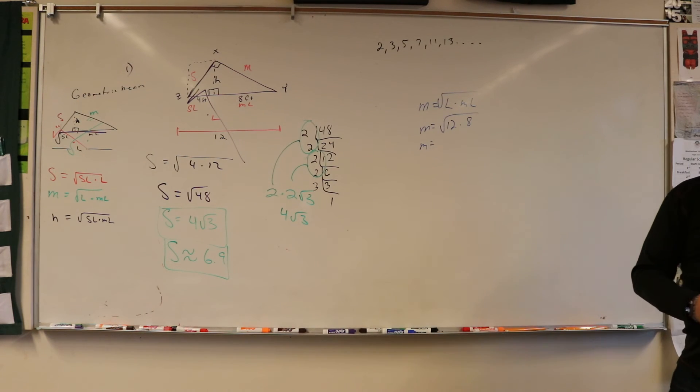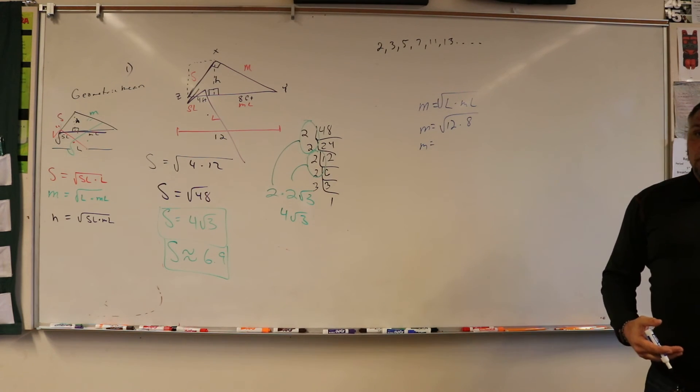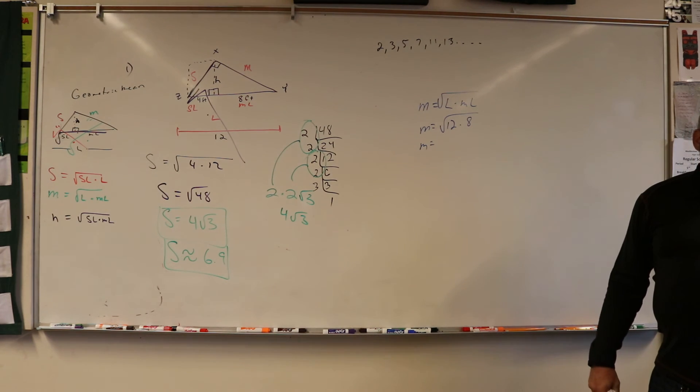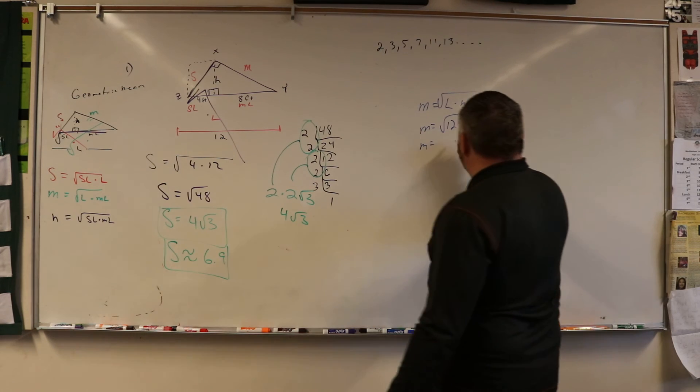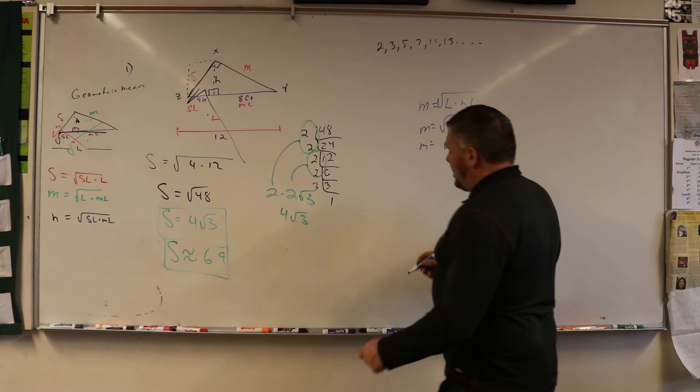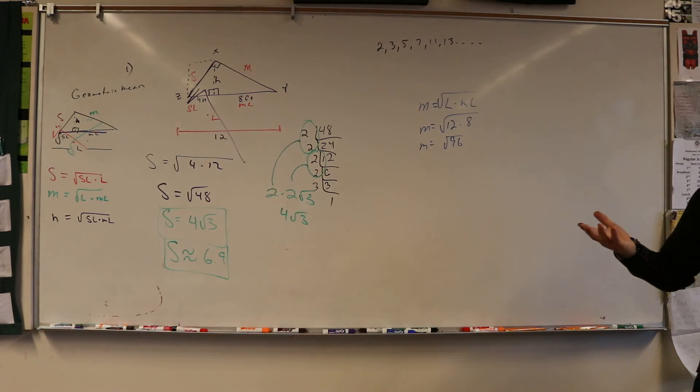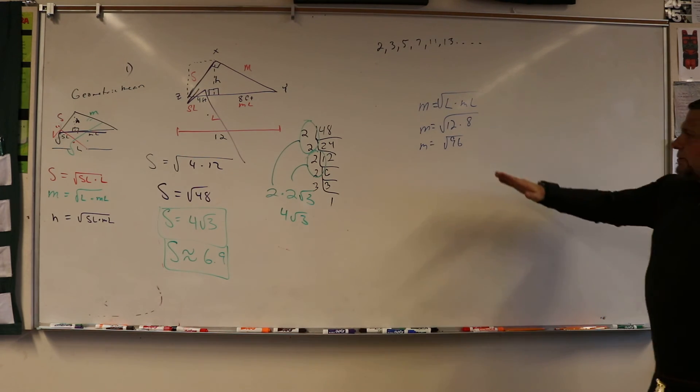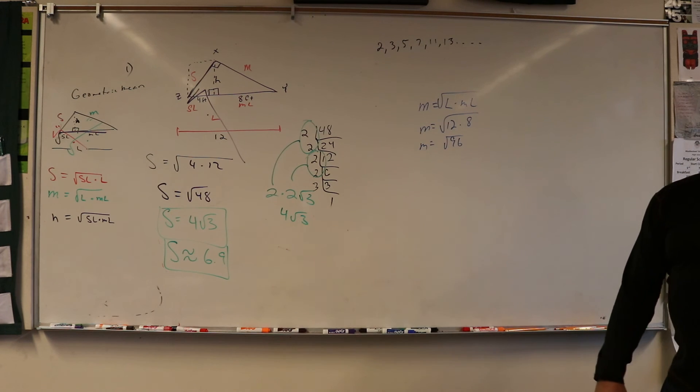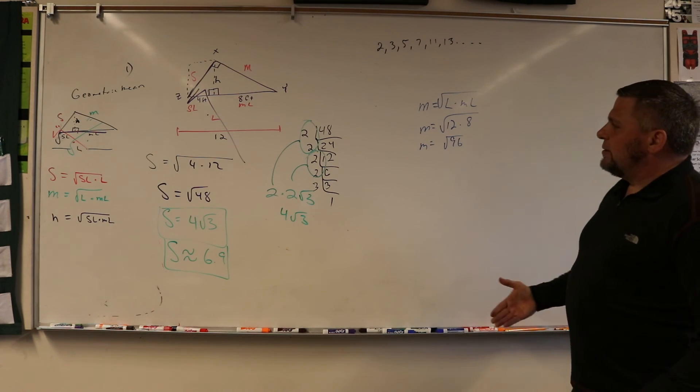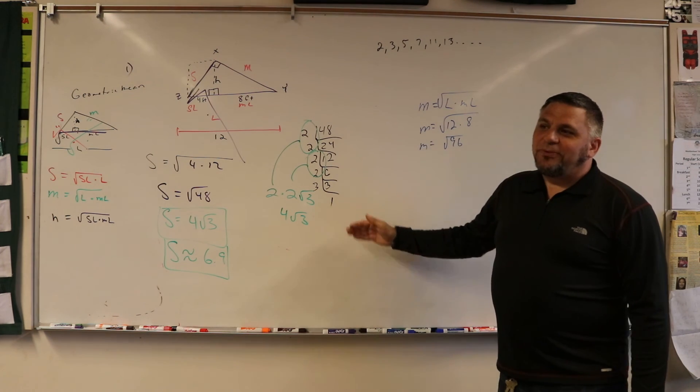M would be equal to 12 times 8 which is 96. Twice as big as the other one, because 8 is twice as big as 4. That's why 48 times 2. So think about this, we'd just be doing two of these 48s.